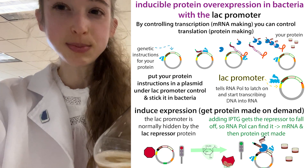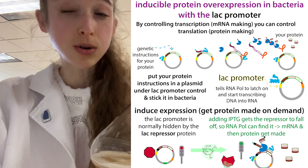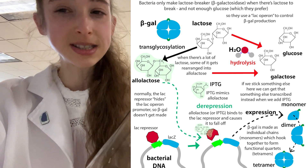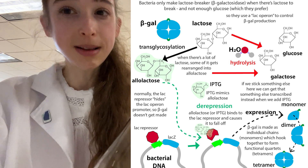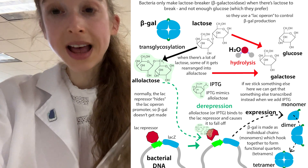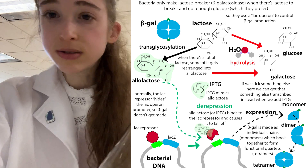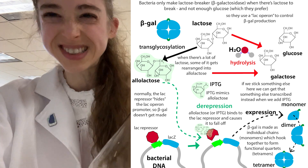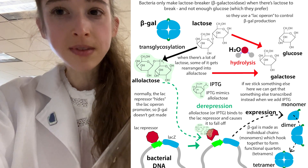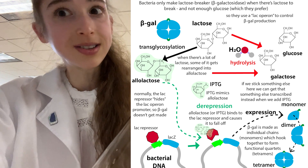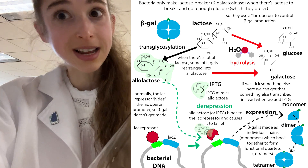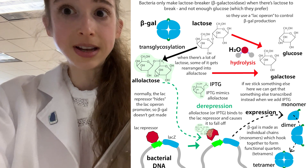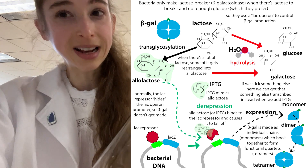The way that I get them to make my protein is by adding a chemical called IPTG. IPTG mimics lactose, which is a type of sugar. Bacteria don't normally like to use lactose because they prefer glucose and things that are easier to break down, and they don't have to make special enzymes to process them.